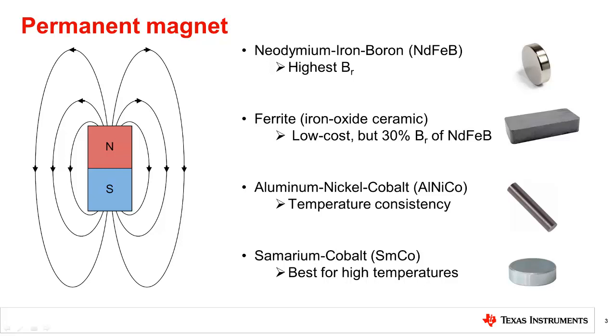Samarium cobalt is most similar to neodymium, but it has better temperature consistency and supports far higher temperatures. As temperature increases, all of these materials produce a reduced flux density. The appropriate shifts per material are shown. If temperature goes too high, all magnets will demagnetize at some point.